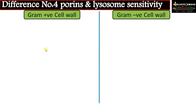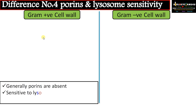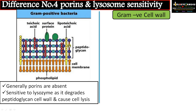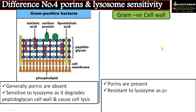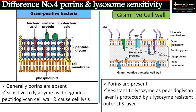Difference number four is regarding porin proteins and lysozyme sensitivity. In gram positive bacteria, porins or water channels are absent, and it is sensitive to lysozyme as lysozyme can easily degrade the peptidoglycan wall and cause cell lysis. Whereas in gram negative bacteria, the outer membrane made of lipopolysaccharide protects the peptidoglycan wall, and the lipid layer is resistant to lysozyme action. Porins or water channels are present in gram negative cell walls. This is one reason gram negative bacteria is more pathogenic than gram positive bacteria.